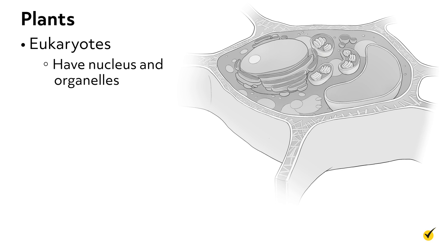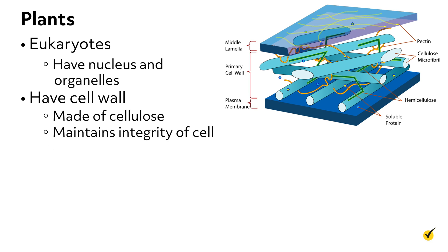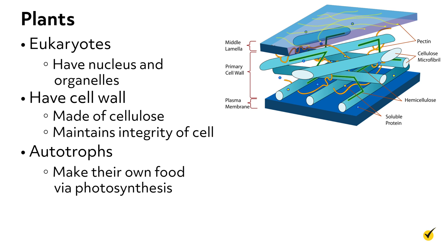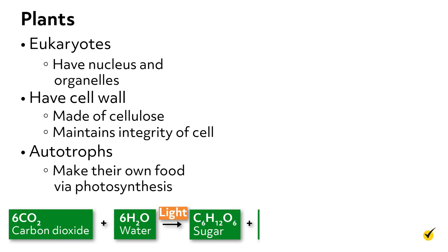First, let's talk about what plants are. Plants are eukaryotes, meaning they have a nucleus and other organelles in their cells that carry out cellular processes that keep the plant alive. They also have a cell wall which is made up of cellulose and helps maintain the integrity of the cell and the plant's overall structure. Unlike animals, plants are considered autotrophs, meaning they are responsible for making their own food. They use energy from the Sun to convert carbon dioxide and water into glucose, as well as oxygen as a byproduct. This process, which is unique to plants, is photosynthesis.